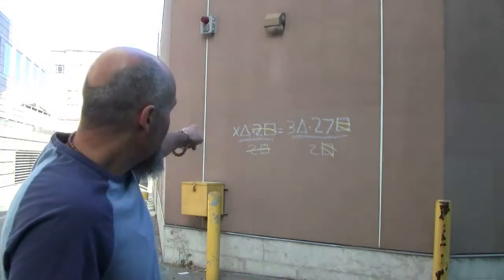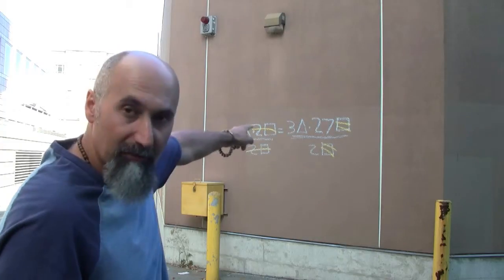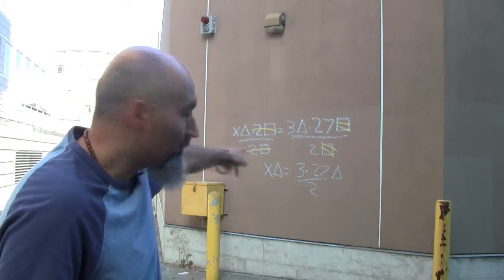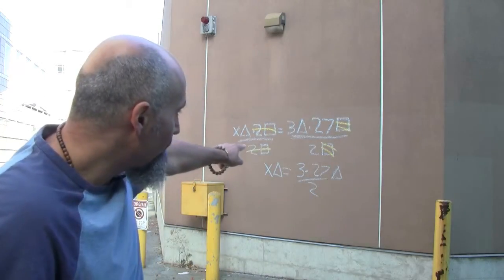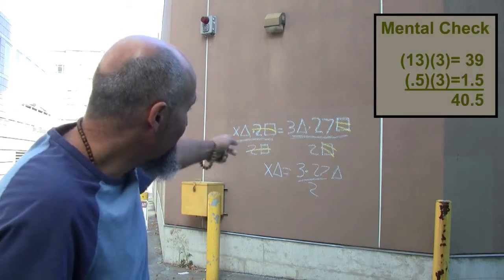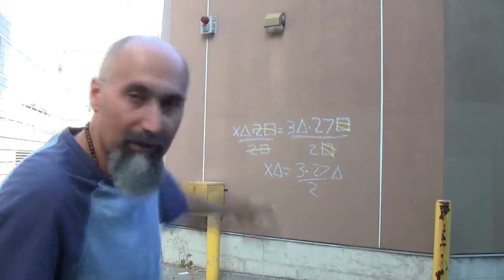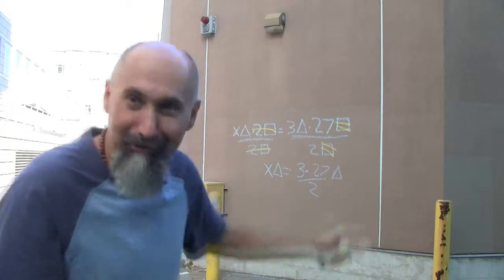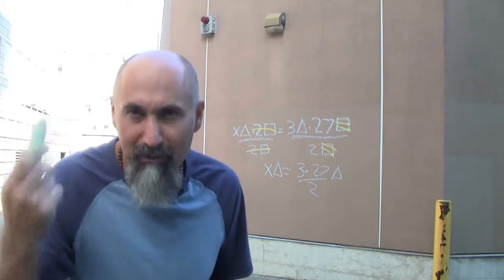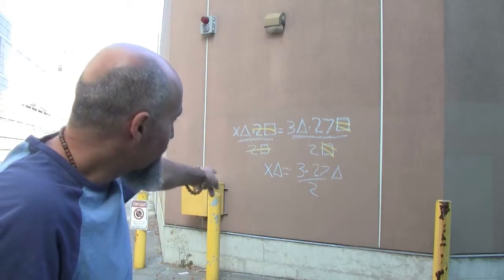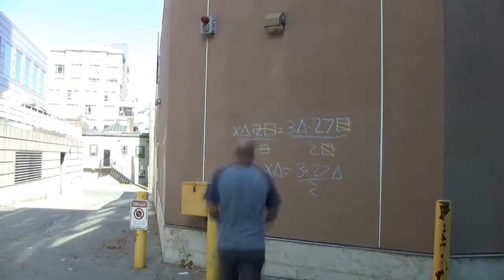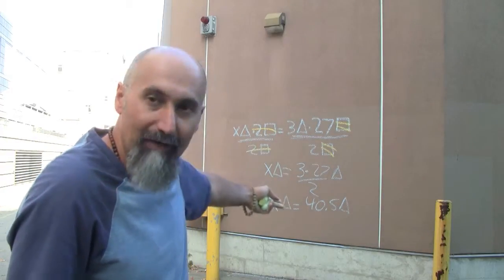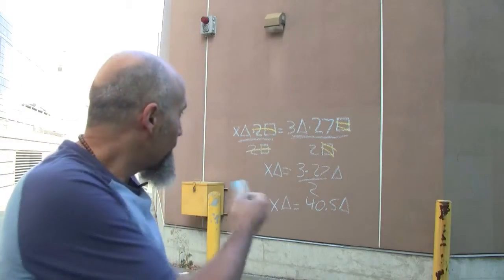Now we have X triangles equal to 3 triangles times 27, divided by 2. We combine the numbers: 3 times 27 divided by 2. The units — triangles — are consistent on both sides. Three times 27 is 81, divided by 2 gives us 40.5. So X triangles equals 40.5 triangles. Dividing out the triangle units, X equals 40.5.